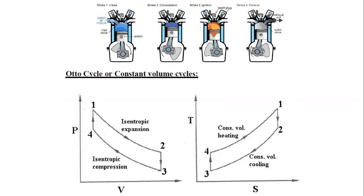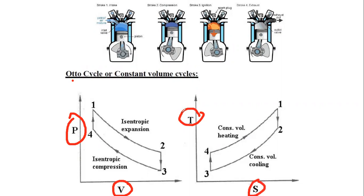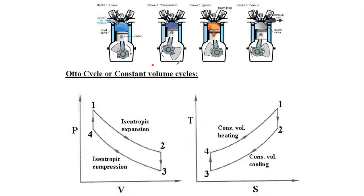Like the Rankine cycle in the steam power plant, thermodynamic cycles are basically the relation of pressure and volume, and the relation of temperature and entropy. We will discuss both the PV diagram and the TS diagram. Starting with the PV diagram — what happens in the compression stroke?